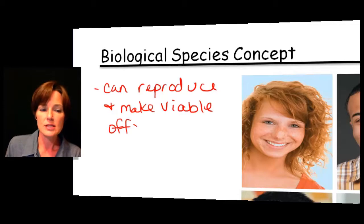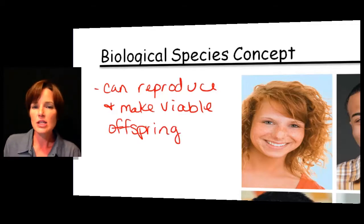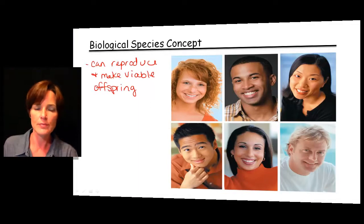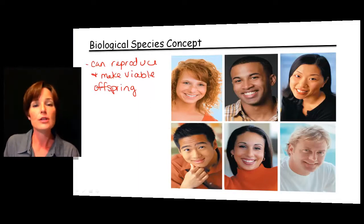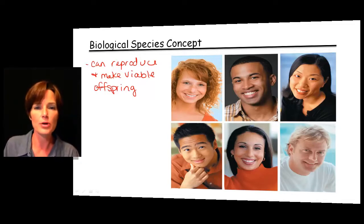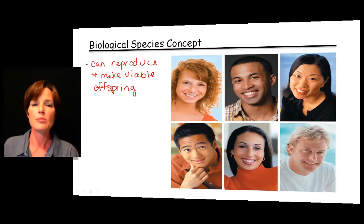When we look at some of the species around us — like the human species — it's clear to us that humans are different from anything else on the planet. But there's more to it than that, because humans, although there's great diversity, can interbreed with each other, and those offspring are going to be able to produce offspring of their own. That's what we mean by viable: their offspring will be fertile and can produce additional fertile offspring.